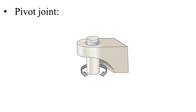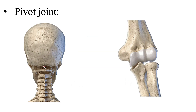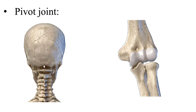Next we have a pivot joint, which allows for rotation around an axis. For example, the joint between C1 and C2 of the vertebrae — also known as the atlantoaxial joint — and the joint at the proximal end of the radius that allows the radial head to rotate around a ring made of annular ligament, allowing for supination and pronation at the forearm.